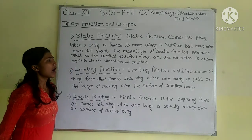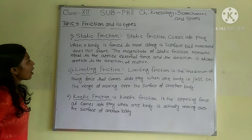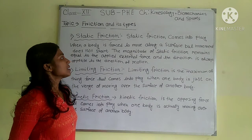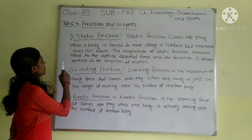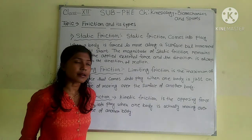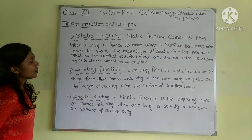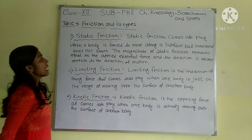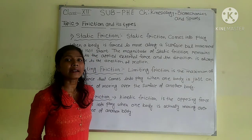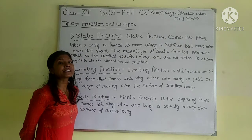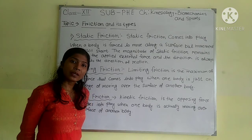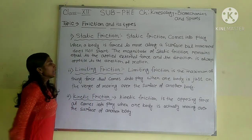Static friction comes into place when a body is forced to move over a surface but movement does not start. The magnitude of static friction remains equal to the applied external force and the direction is always opposite to the direction of motion. Next, limiting friction.